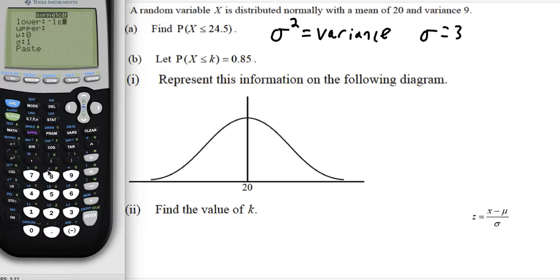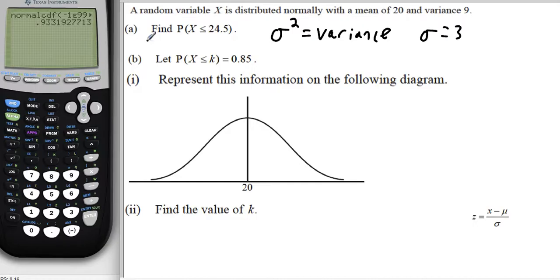So second comma and then 99. This is just negative 1 times 10 to the power of 99 in calculator notation. The upper boundary, we can go all the way up to 24.5, but we've got to be less than it. So that's going to be our upper boundary. The mean we were given is 20, and the standard deviation we found to be 3. So we've put everything in. Go to paste and enter. And we get the probability equal to 0.933 to 3 significant figures.